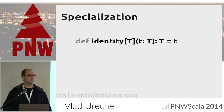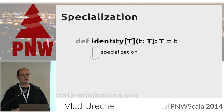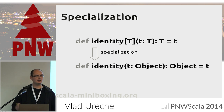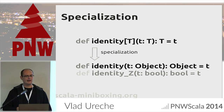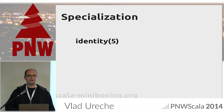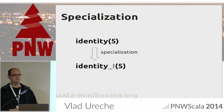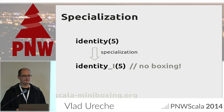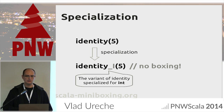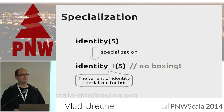There is already a solution in the Scala compiler — specialization. If we compile this method with specialization, we get the version that takes an Object and returns an Object, but we also get other versions for other primitive types such as Boolean, Character, and seven other variants. When we do identity of 5, we get a call to a specialized variant which doesn't require any boxing and does not allocate an object.